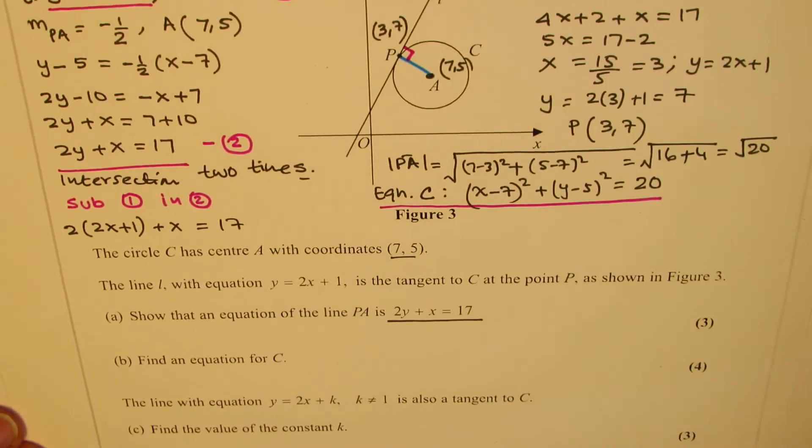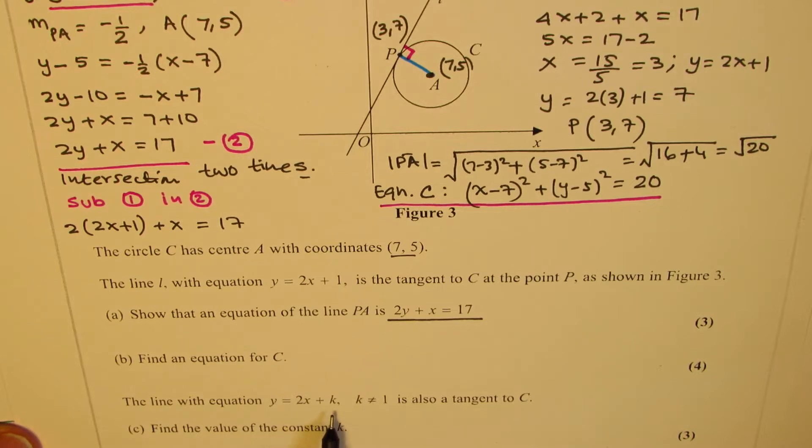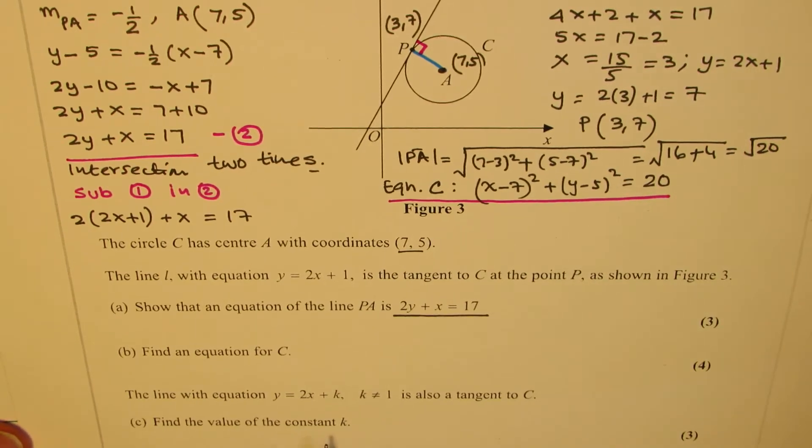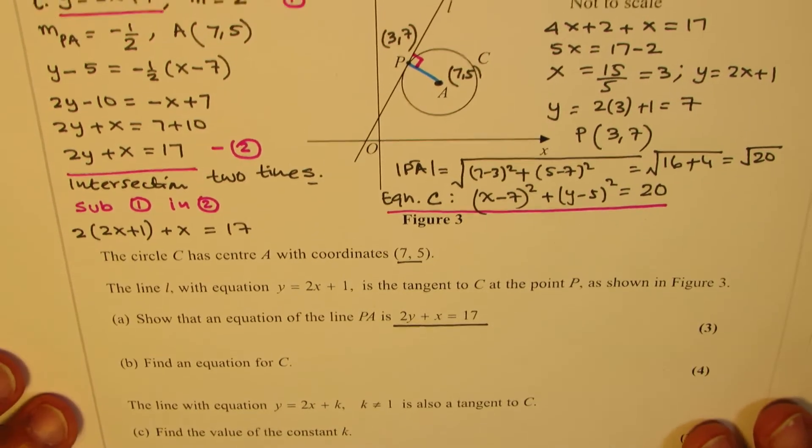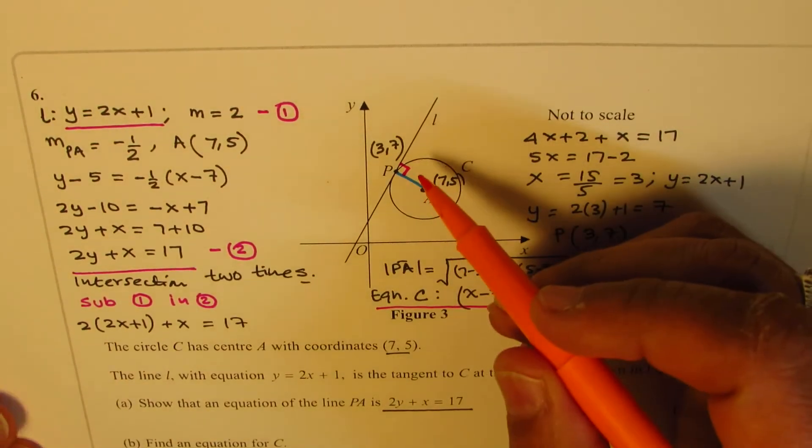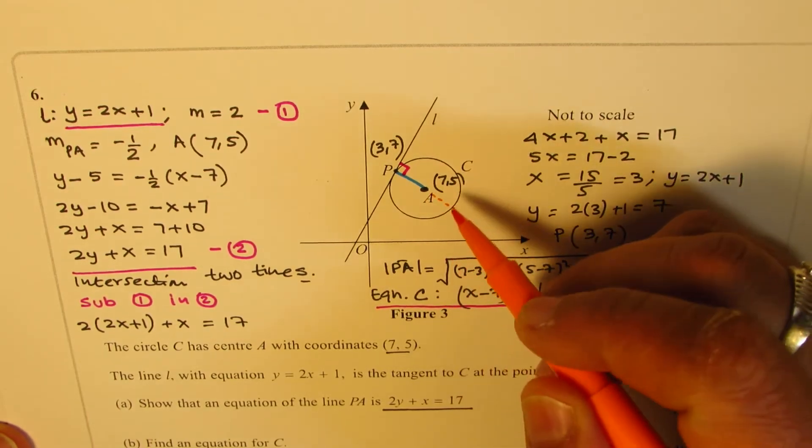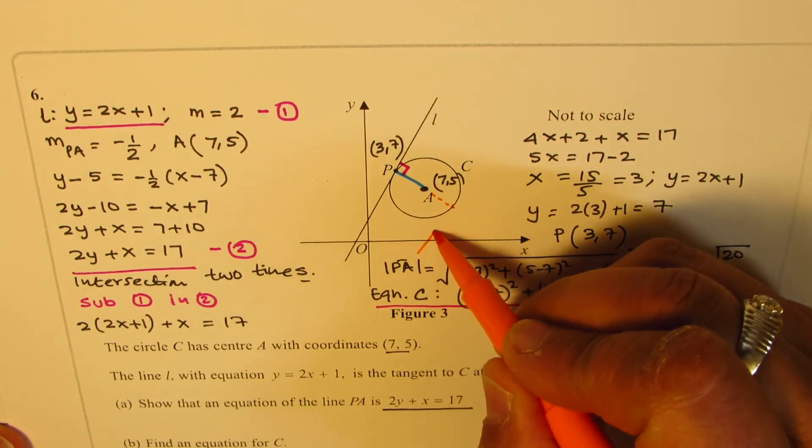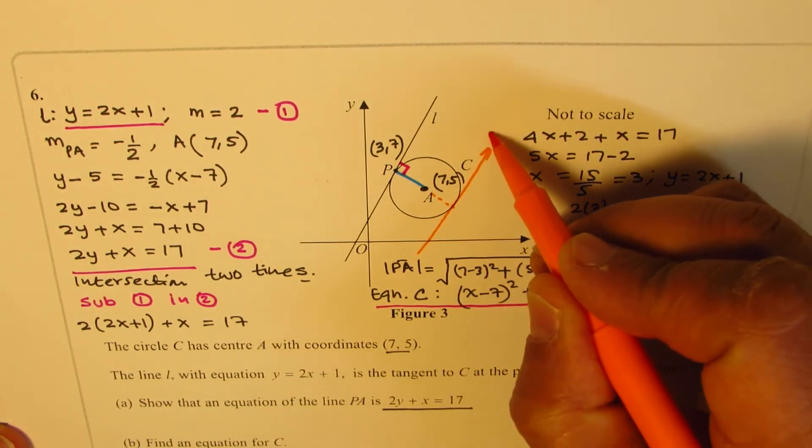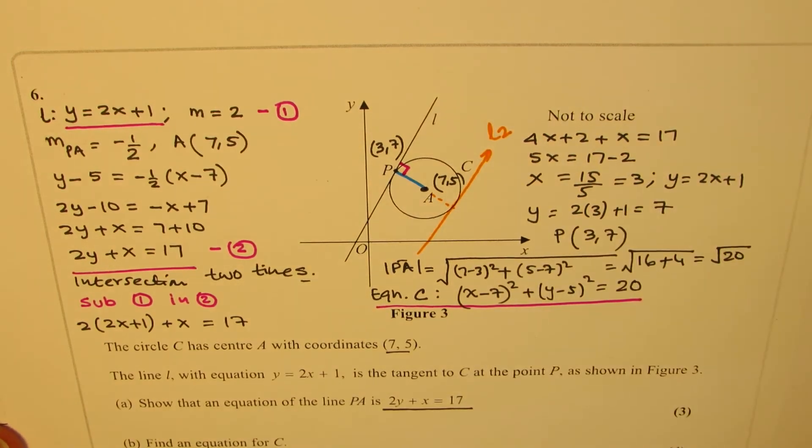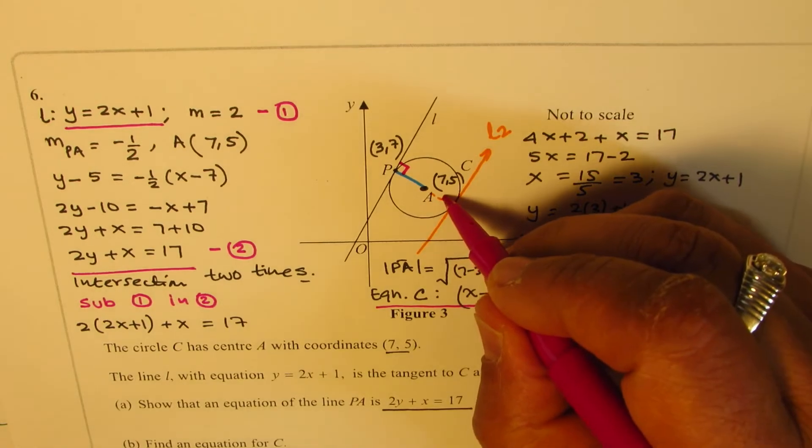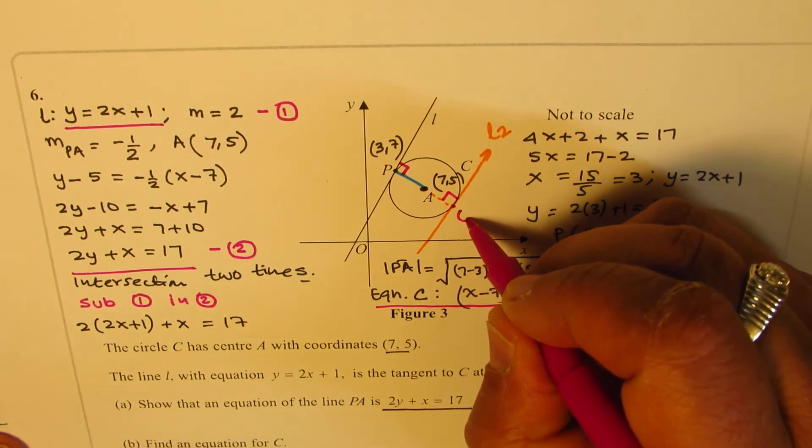The next part: the line with equation y = 2x + k, where k is not equal to 1, is also a tangent to C. Find the value of the constant k. So that means there is another tangent which is parallel to this. If you look into the diagram, a line parallel to this tangent will intersect the circle at this point. So that becomes your line L2, which is also tangent to this particular circle.